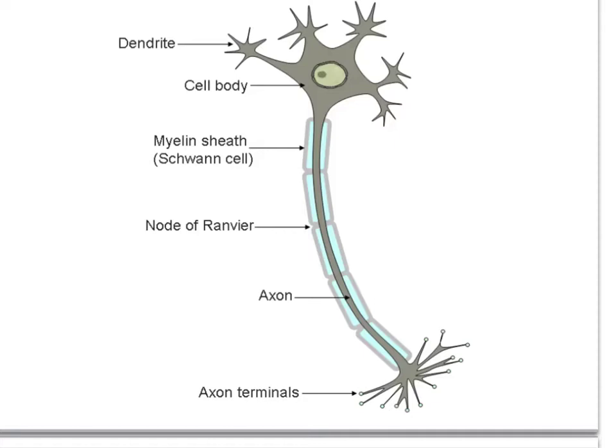So first off, we have a neuron. We can have a look at a few main parts that you're probably familiar with. The dendrites, which are those parts of the neuron which receive the message initially. The cell body, which contains the nucleus. The long axon which travels down — that's the longest part of the cell.